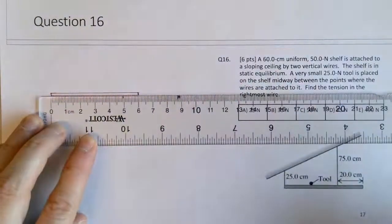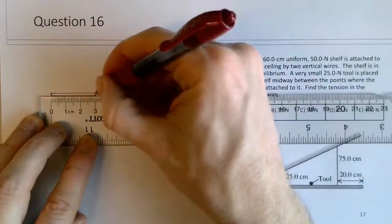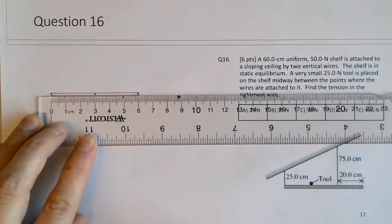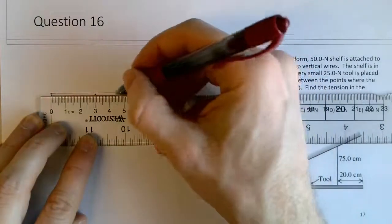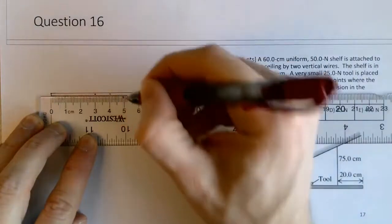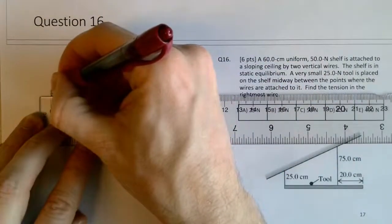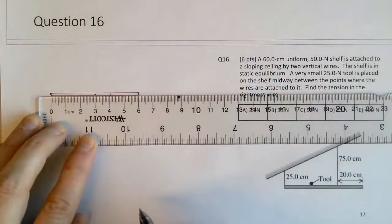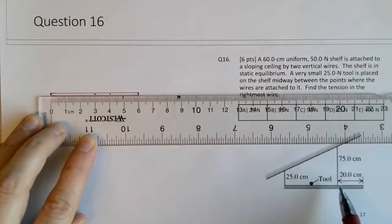So I know the weight force will act right in the middle, so 30. We know the rightmost wire is 20 from the end, and there's another tension here. And then the tool is placed halfway between these two wires, so if this is 20 centimeters here, there's 40 centimeters between the two wires to make up the 60 centimeters.